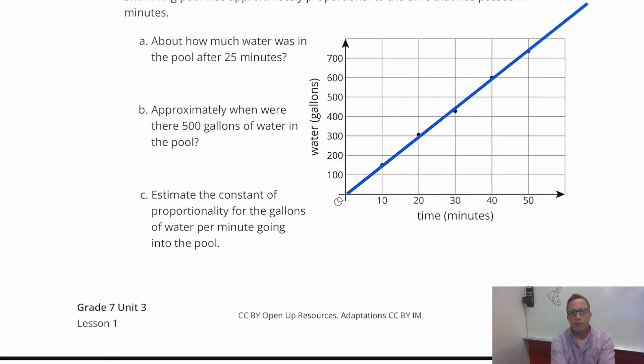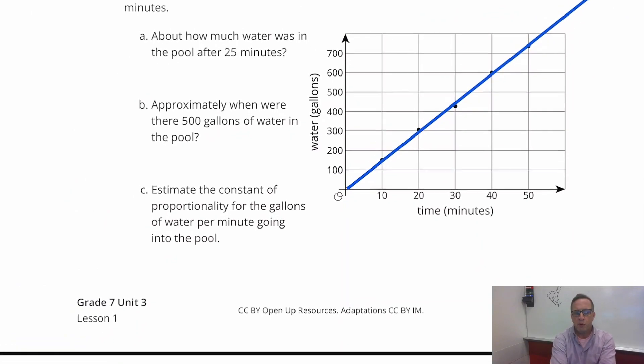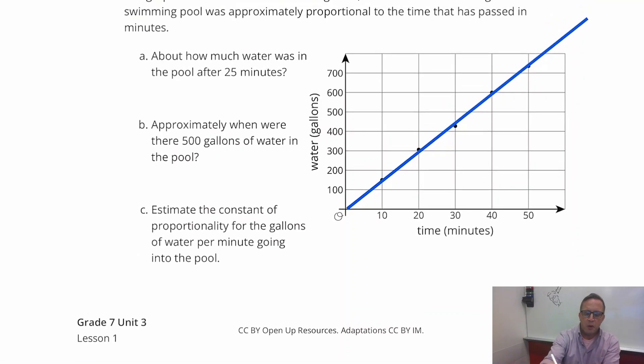But anyhow, back to the question. Letter A says, about how much water was in the pool after 25 minutes? Well, 25 minutes is right here. It's halfway between 20 and 30. So I'm just going to direct my line up there. And I'm going to say it's about right there. And then I'm going to look where the y-axis, gallons, where does that correspond with that part of the graph? So right around there. It's not perfect. Again, I keep saying that because we're just eyeballing this. We're doing this by hand. And I'd say it's probably around 350.